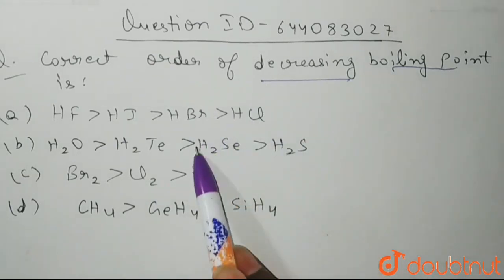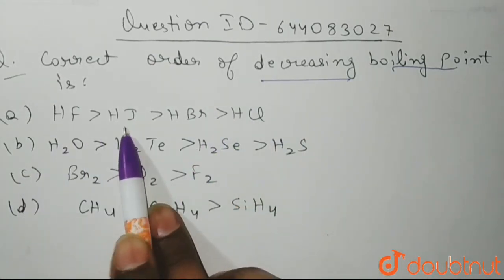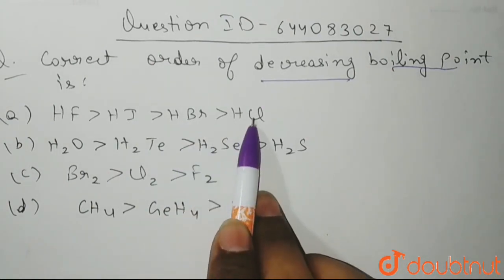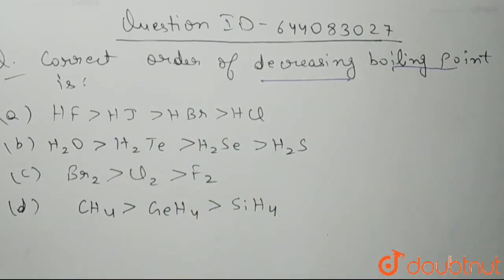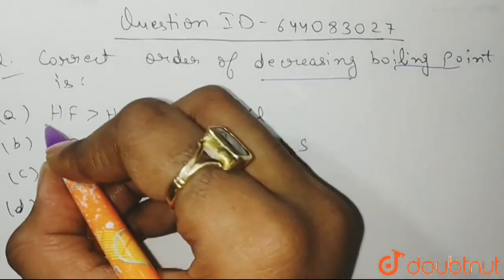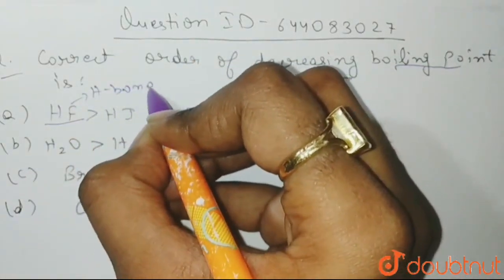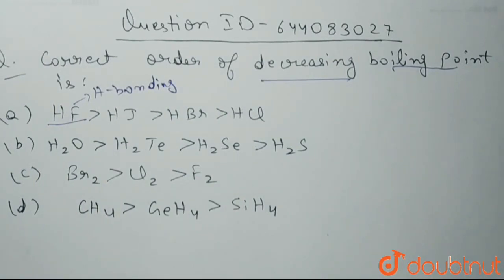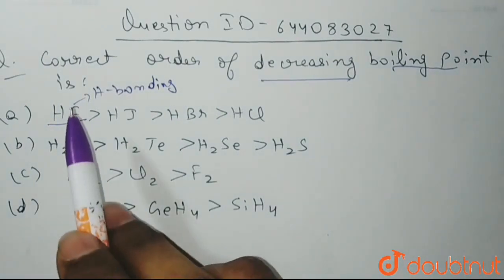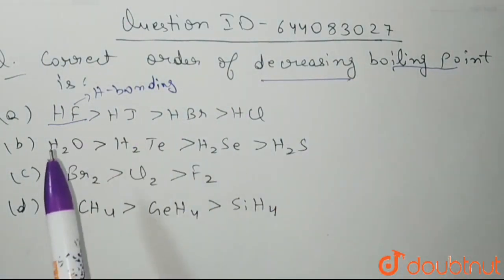These four options are given to us. Now let's see: HF is greater than HI, then greater than HBr and HCl. So this is the correct option. Why? Because HF has hydrogen bonding in its molecule, so HF will definitely have the greater boiling point.